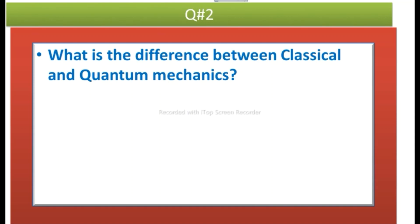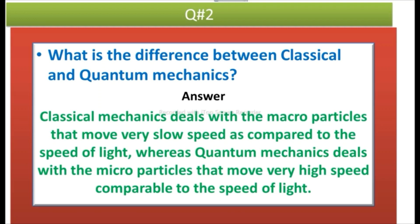Question number two: What is the difference between classical and quantum mechanics? Answer: Classical mechanics deals with macro particles that move very slow speed as compared to the speed of light, whereas quantum mechanics deals with micro particles that move very high speed comparable to the speed of light.